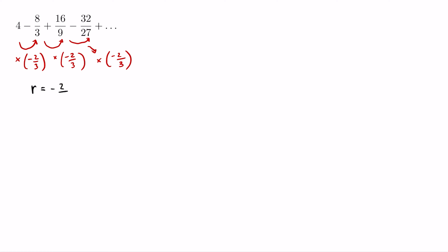So R is equal to negative 2 thirds. And because the absolute value of R — the absolute value of negative 2 thirds — is equal to 2 thirds, which is less than 1, this implies that this geometric series is convergent.